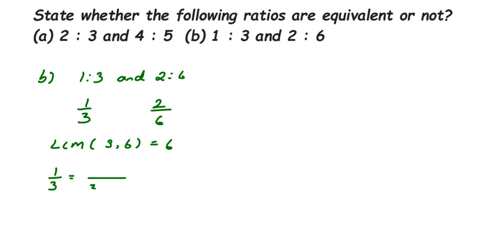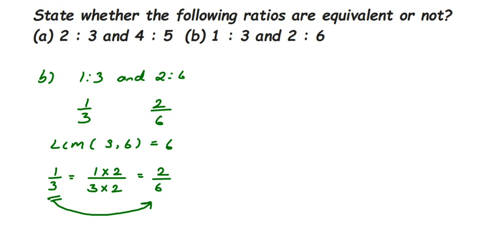For the first number 1/3, to get 6 in the denominator, multiply by 2 in both numerator and denominator to get 2/6. The second number already has 6 in the denominator so it stays as 2/6. We have 1/3 equivalent to 2/6, and the second number is also 2/6. They are equal, which means 1 is to 3 and 2 is to 6 are equivalent.